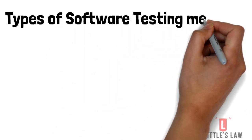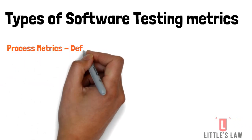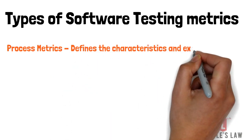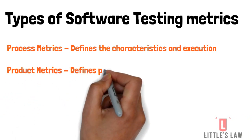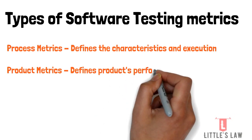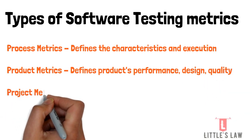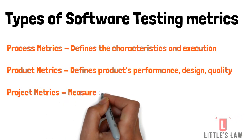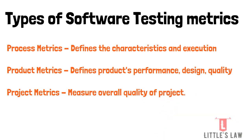Let's now see the types of software testing metrics. We have three: process metrics, product metrics, and project metrics. Process metrics define the characteristics and execution essential for improving the SDLC. Product metrics define a product's performance, design, quality, and complexity. Project metrics measure the overall quality of a project and help calculate the team's performance, project cost, defects, and deliverables.